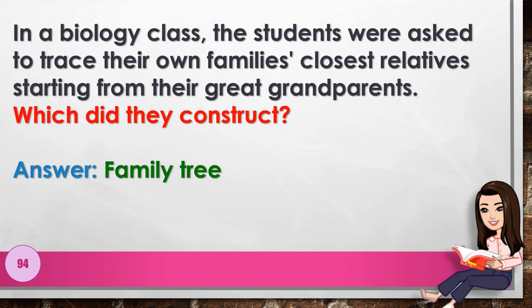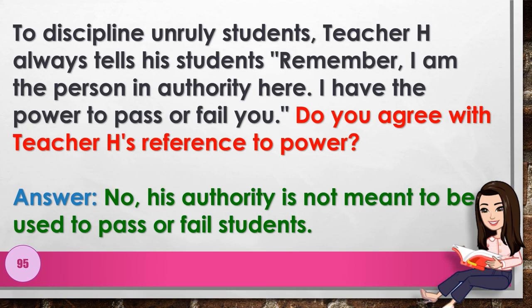Number 94: In a biology class, students were asked to trace their own family's closest relatives starting from their great-grandparents. Which did they construct? Answer: family tree. Number 95: To discipline unruly students, Teacher H always tells his students 'Remember, I am the person in authority here; I have the power to pass or fail you.' Do you agree with Teacher H's reference to power? Answer: no, his authority is not meant to be used to pass or fail students.